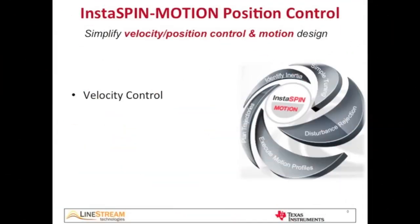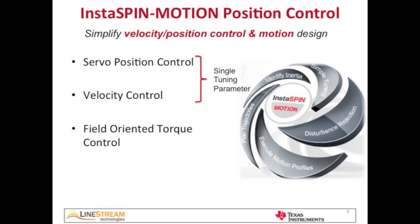With Instaspin Motion, you get both. Instaspin Motion offers velocity control with inner field-oriented torque control and an outer servo position loop that only requires a single tuning parameter for position plus velocity.